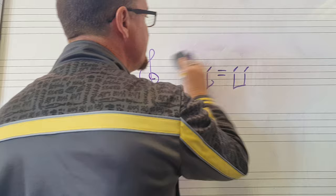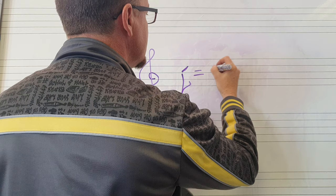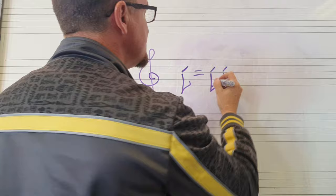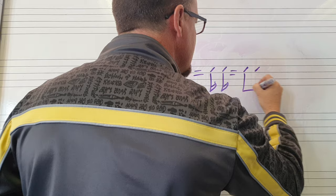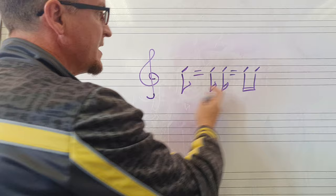Let's take a quaver and break that down in half — that would equate to two semi-quavers. And if you take the two semi-quavers and you beam them, because they've got two little flags, we'd need two lines for the beaming. So that's what the beaming looks like.